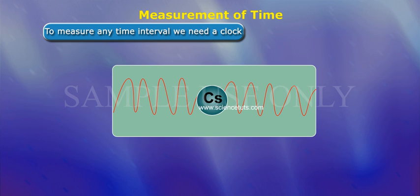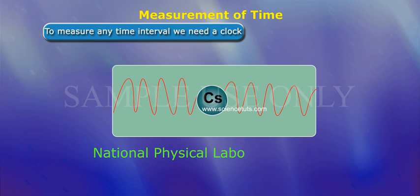A caesium atomic clock is used at the National Physical Laboratory, NPL, New Delhi, to maintain the Indian standard of time.